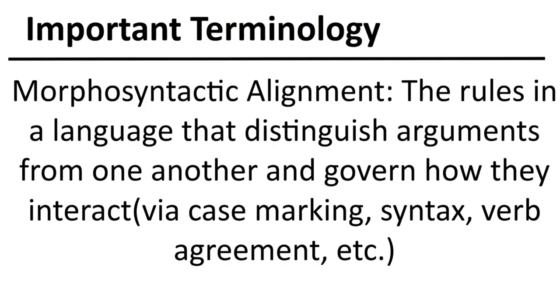Morphosyntactic alignment, or just alignment, is essentially the rules within a given language that distinguish roles and arguments from one another, govern how they interact, and determine how they can behave in a sentence or a clause as a whole. In one language, one argument may behave entirely differently from that same argument in a different language. This may manifest via case marking, syntax, and even verb agreement.